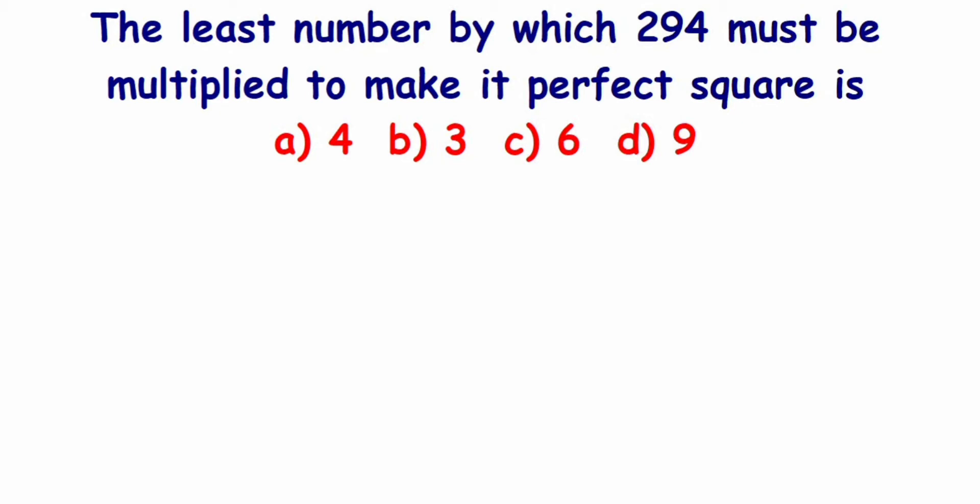Hi everyone, here is a question on square root. The question is: the least number by which 294 must be multiplied to make it a perfect square is. They have given four options: 4, 3, 6, and 9. What is the least number to be multiplied?